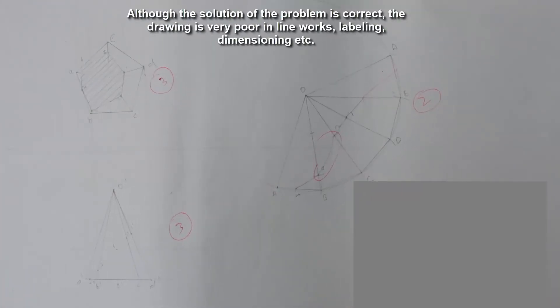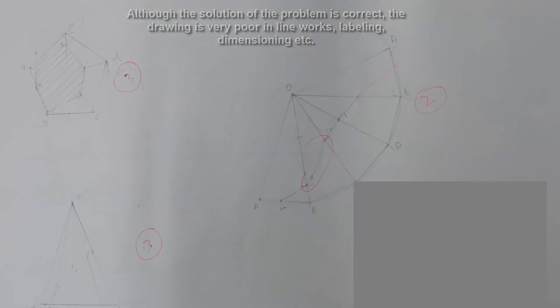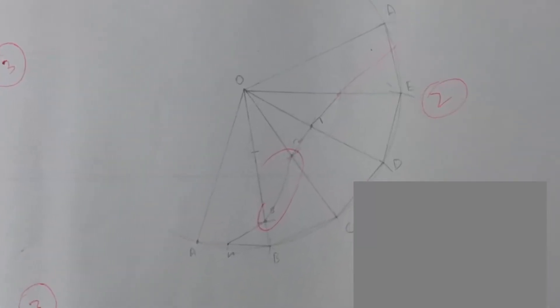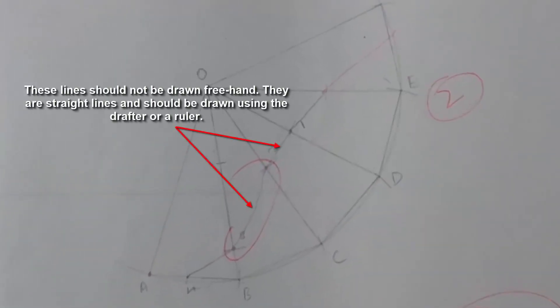Although the solution of this problem is correct, the drawing is very poor in line works, labeling, dimensioning, etc. For example, these lines should not be drawn freehand. They are straight lines and should be drawn using the drafter or ruler.